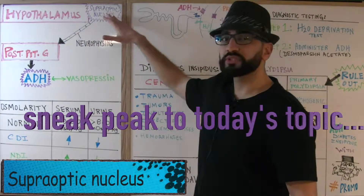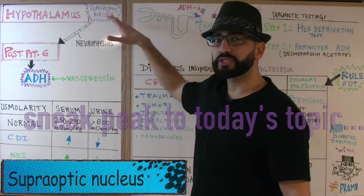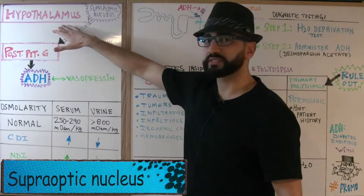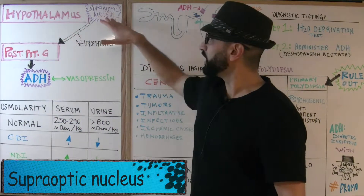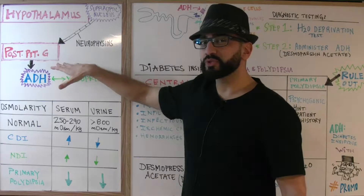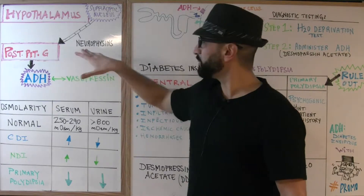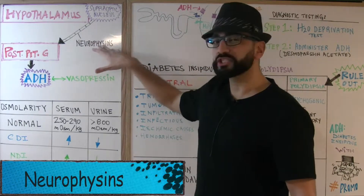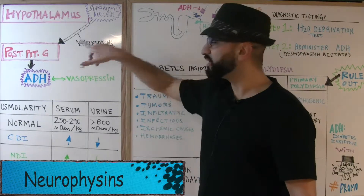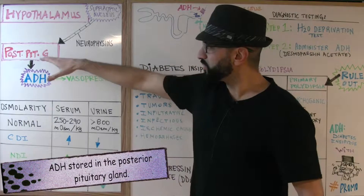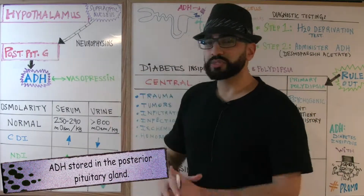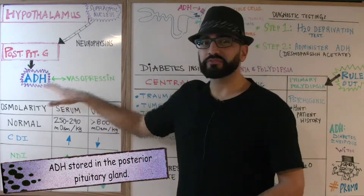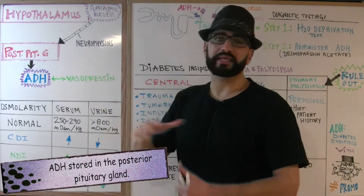Antidiuretic hormone is produced in the supra-optic nucleus of the hypothalamus. It is brought to the posterior pituitary gland by specialized channels called the neurosecretory vessels. So in the posterior pituitary gland, that's where this ADH vasopressin is hanging out.